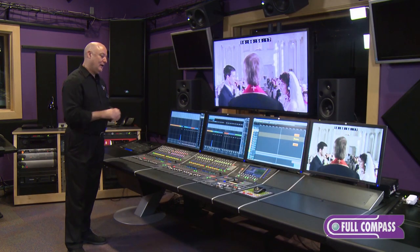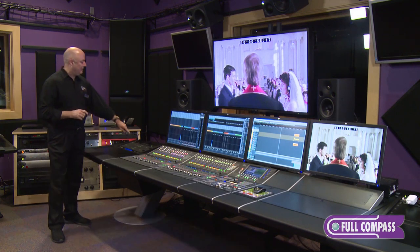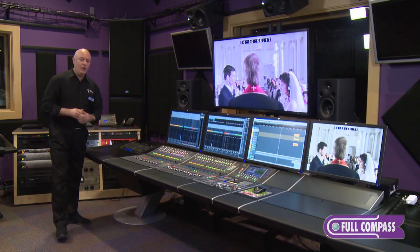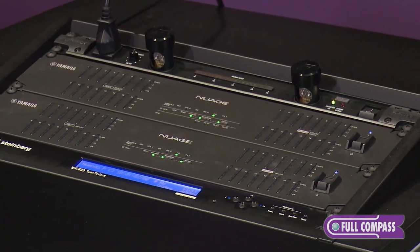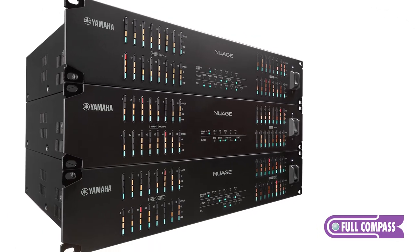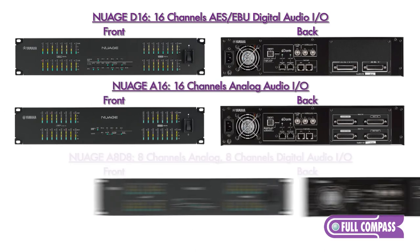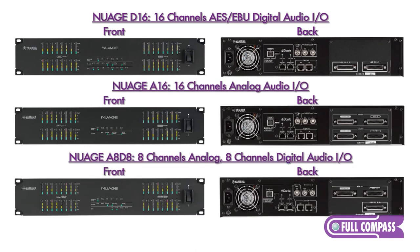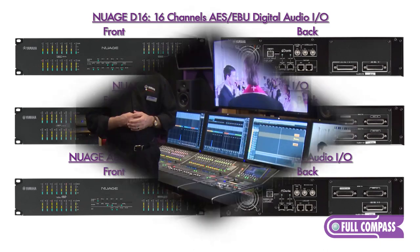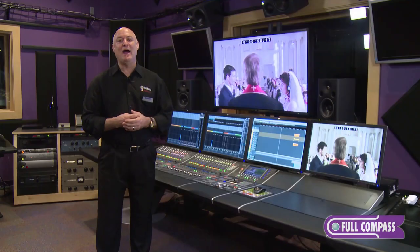So that is the control surface side of Nuage. Then you have the I/O. The I/O, of course, is your inputs and outputs. The Nuage I/O — NEO for short — gives you three flavors: 16 channels in and out of AES-EBU digital, or flavor number two is 16 channels of analog, and flavor number three is eight of each. They use DB25 pins on the back. You can also use RIO, which is a stage box from Yamaha that incorporates very high quality mic pres.